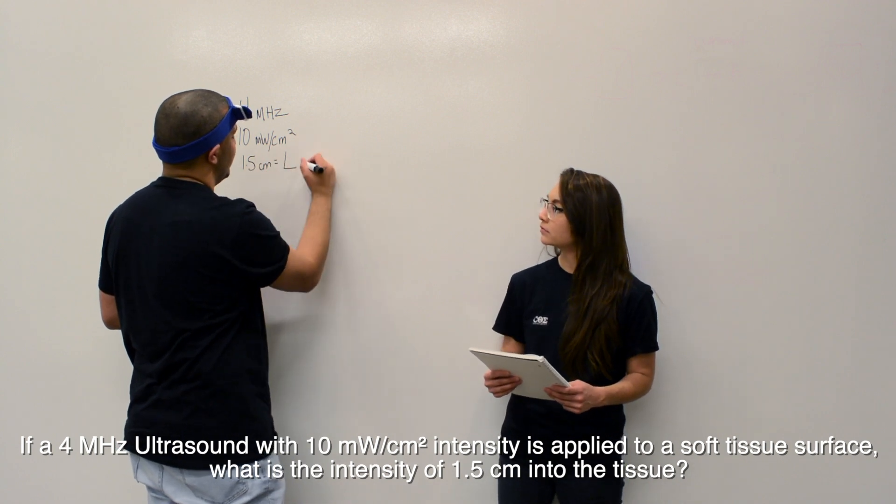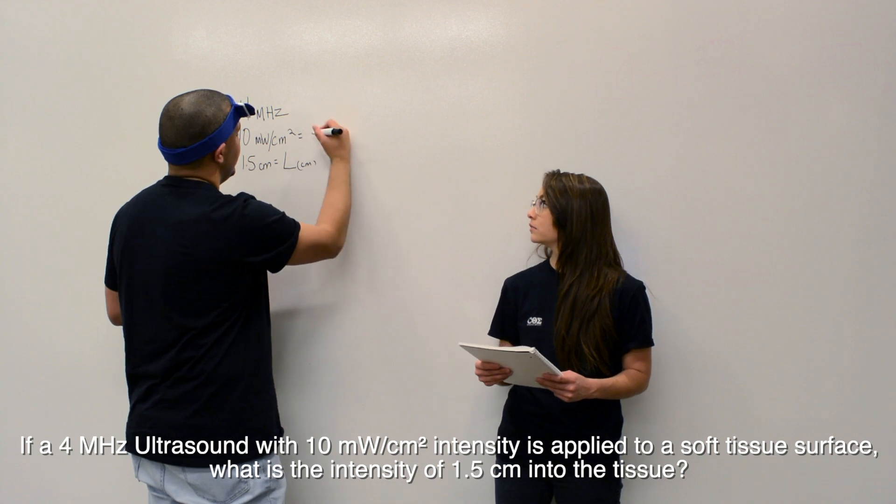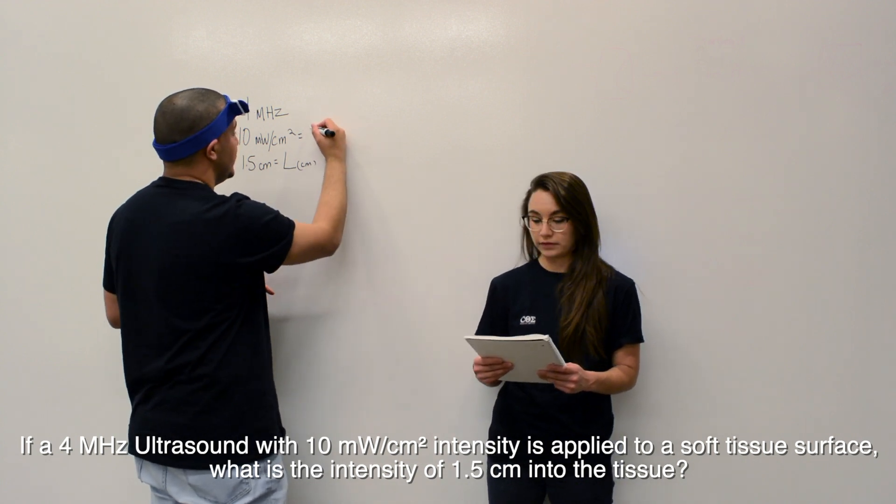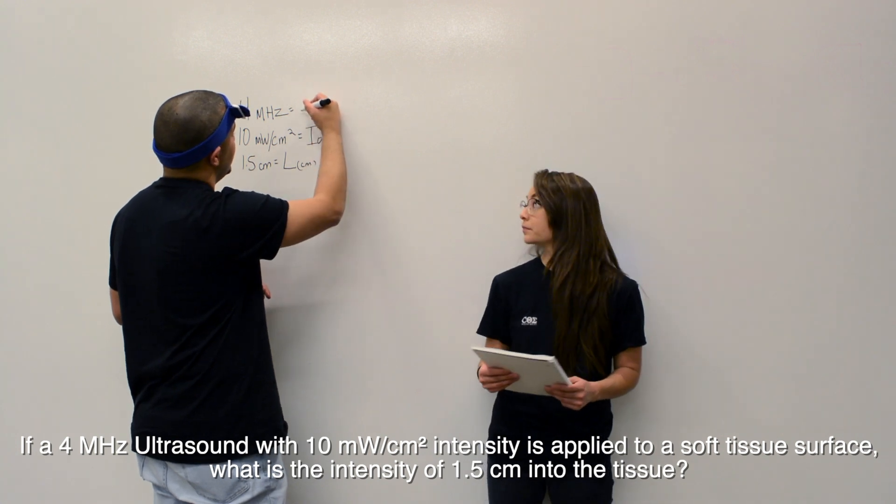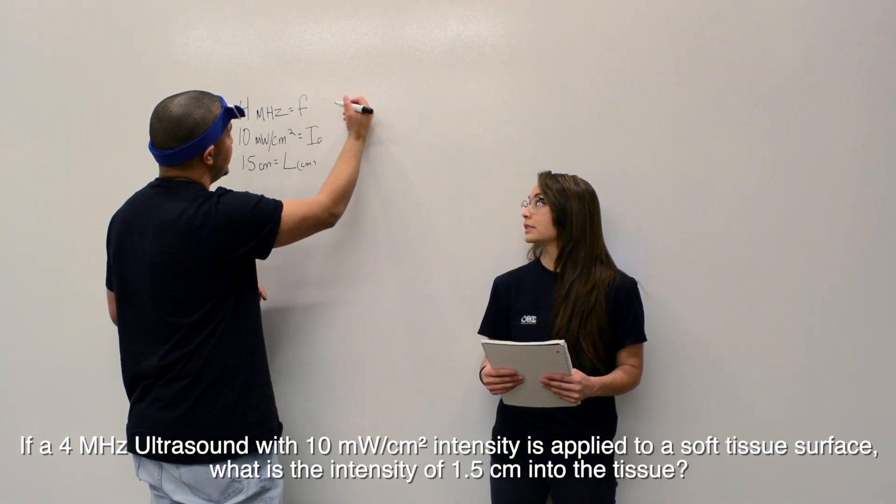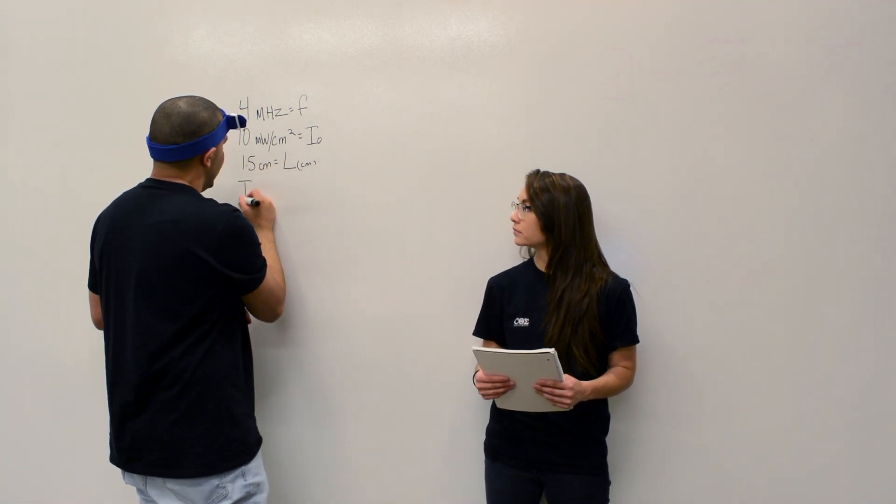All right, so this is your length, the 1.5, and you want it in centimeters. The 10 milliwatts per centimeter squared, that's your initial intensity. And your 4 megahertz is your frequency. And we're solving for final intensity, so I'll just put it as IF.